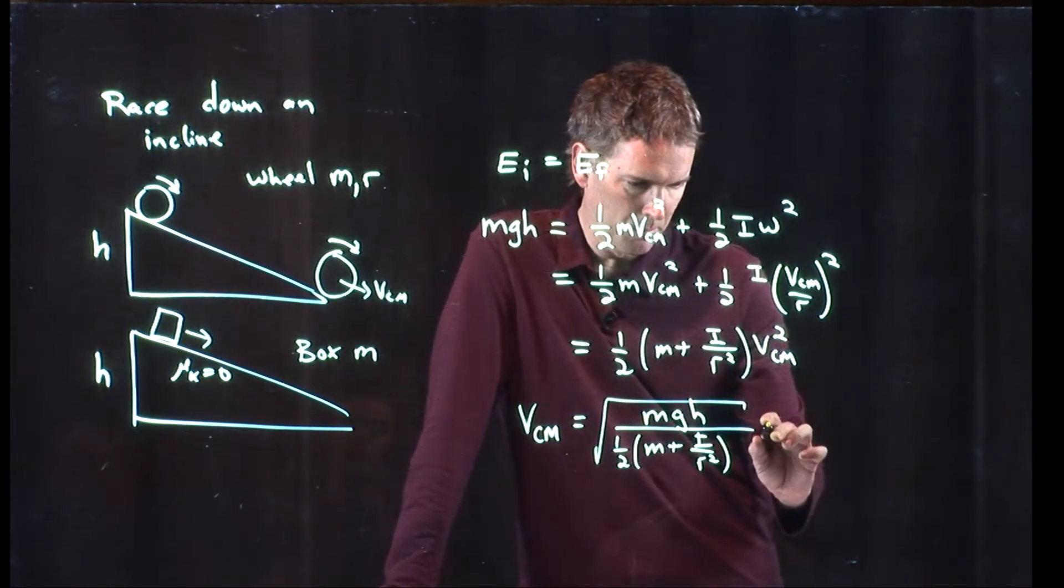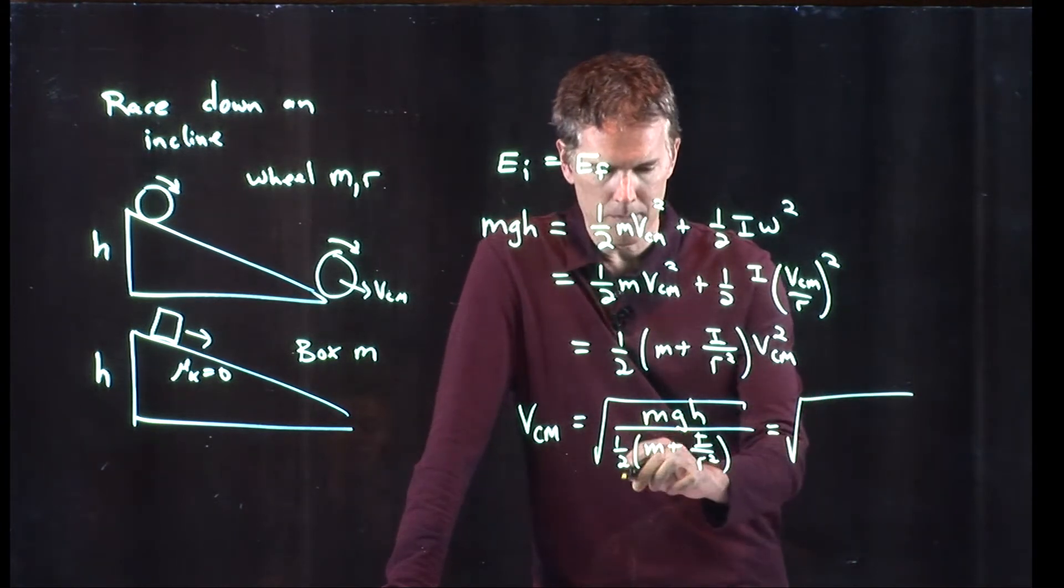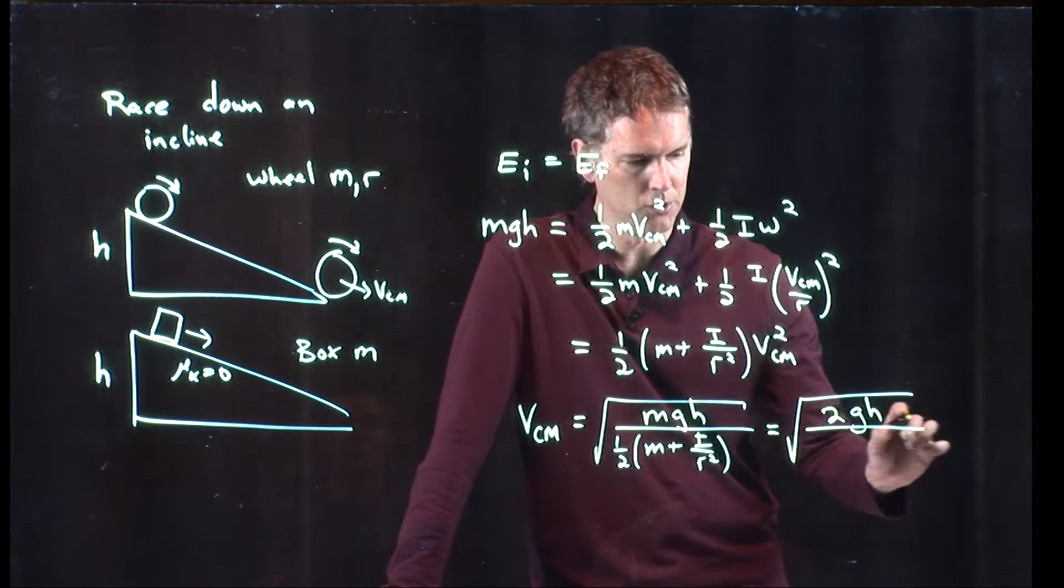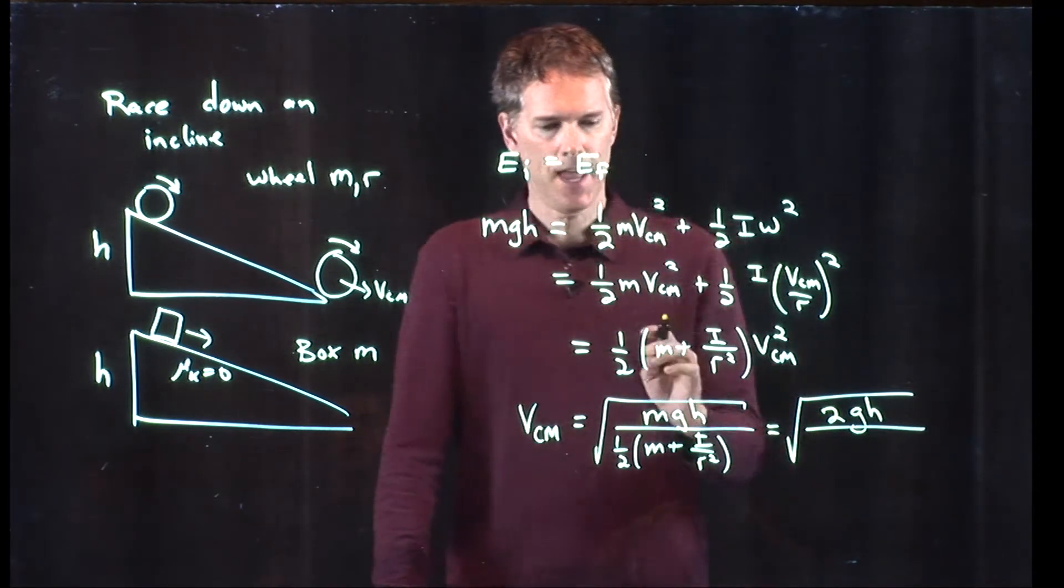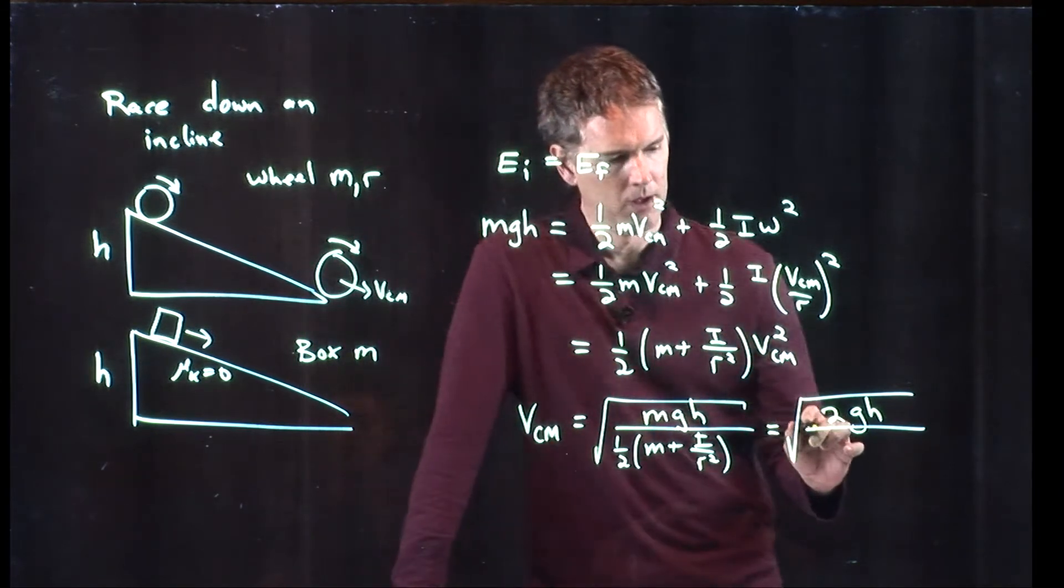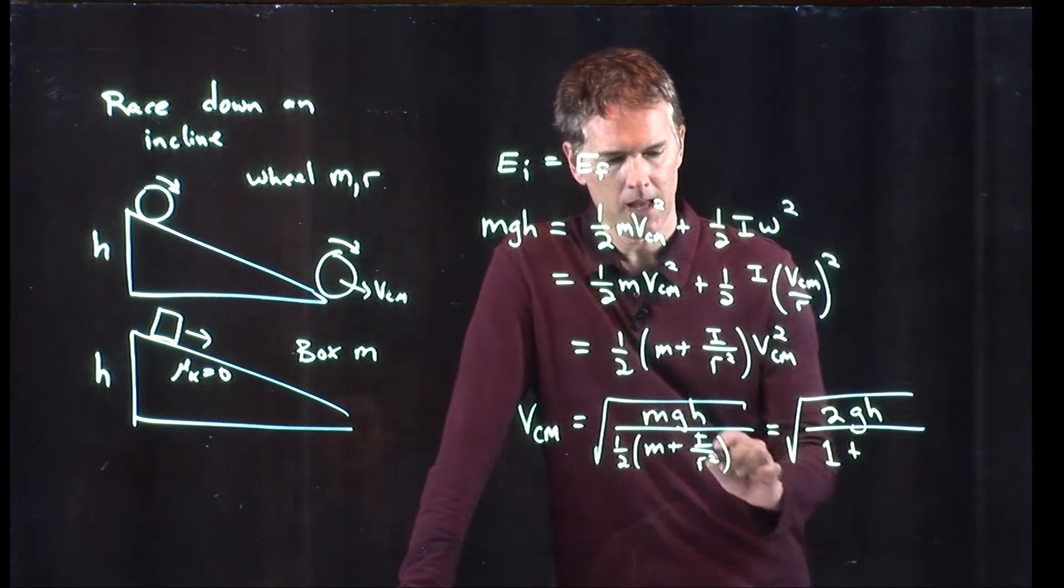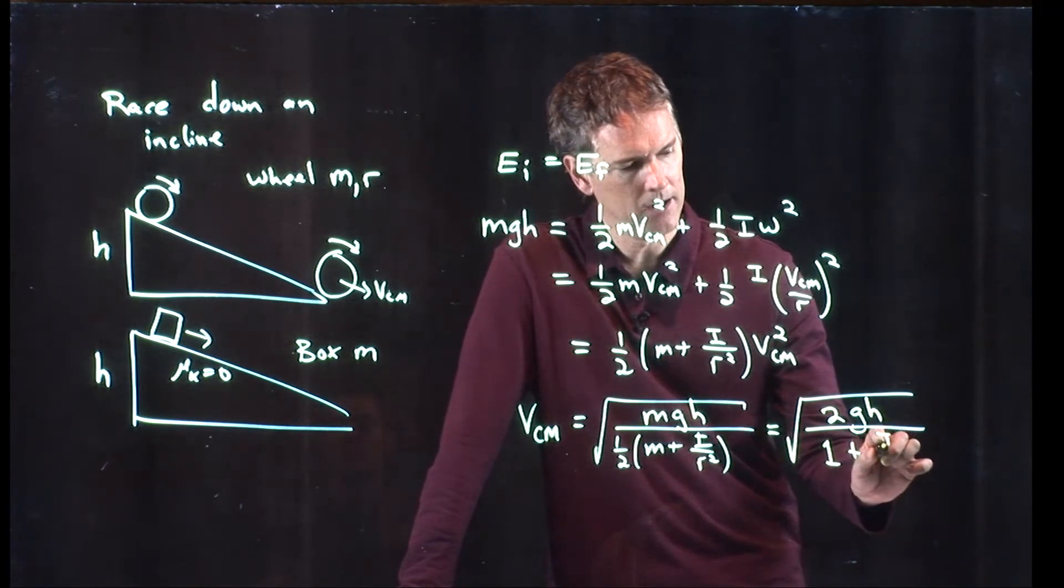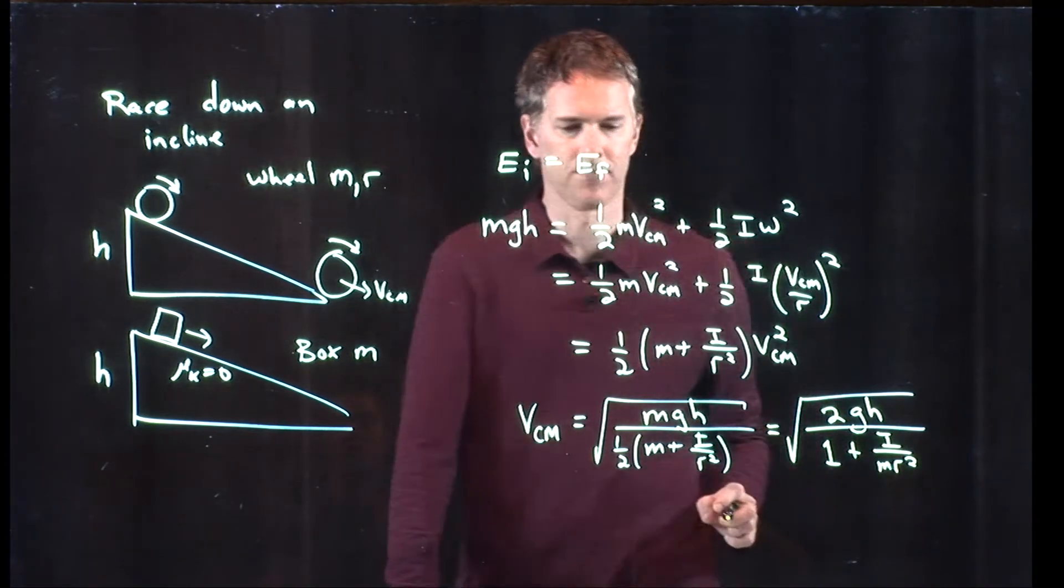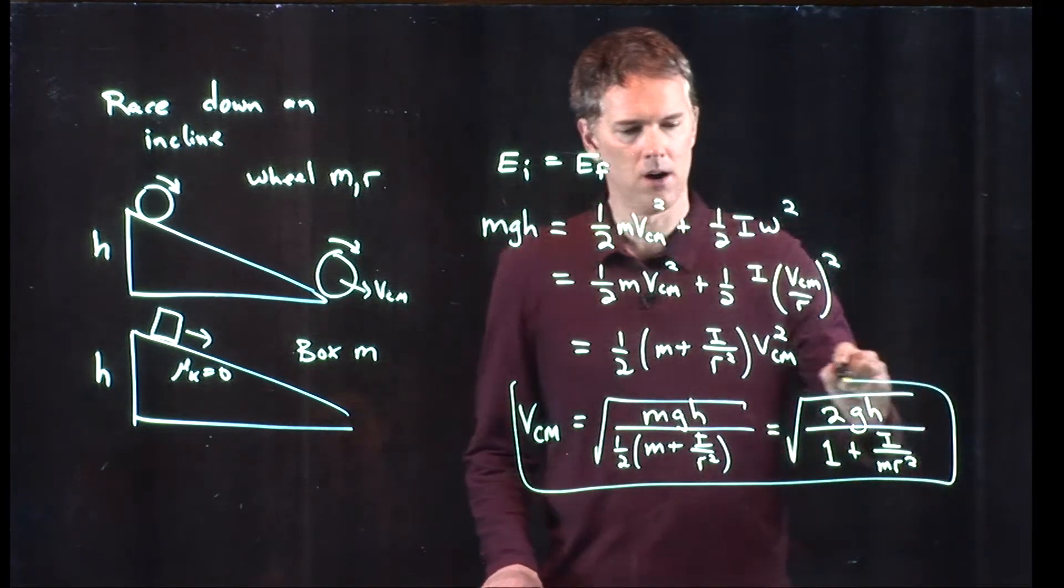Now we can simplify this a little bit more by the following. Half on the bottom means two on the top, so let's put 2gh. I have an m in the top and an m in the bottom, let's divide everything by m. If I do that, then this one becomes a one, and this becomes I over mr squared. So this is the velocity of the wheel.